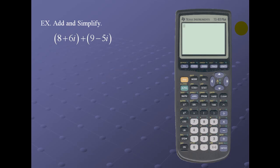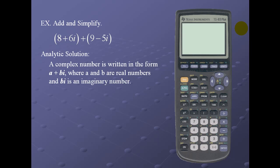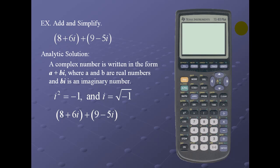Complex numbers. Let's add and simplify the following complex numbers: (8 + 6i) plus (9 - 5i). A complex number is written in the form a + bi, where a and b are real numbers and bi is an imaginary number. Key facts: i² = -1 and i = √(-1). When we add two complex numbers, we simply add the real numbers and combine the imaginary numbers, for a result of 17 + i.